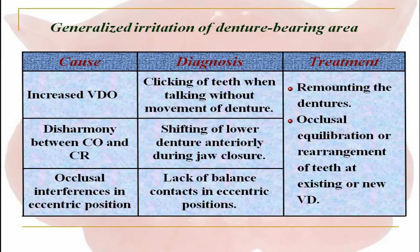For generalized irritation of denture bearing areas, the cause could be increased vertical dimension and occlusion. The diagnosis is clicking of the teeth when talking, with no movement of the denture. Disharmony between centric occlusion and centric relation is diagnosed by shifting of the lower denture anteriorly during jaw closure. Occlusal interference in eccentric position is diagnosed by lack of balance between contacts in eccentric positions. Treatment could be remounting the dentures, occlusal equilibration, or rearrangement of teeth.